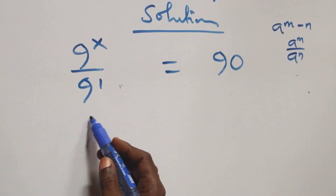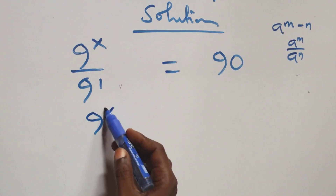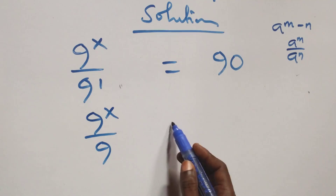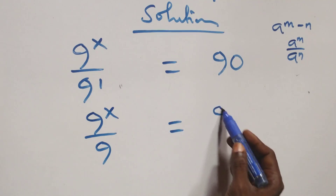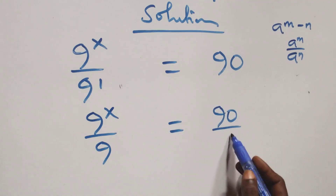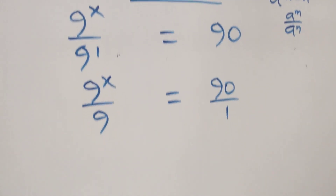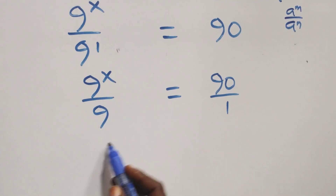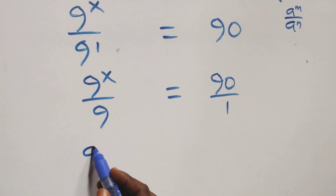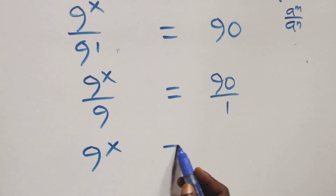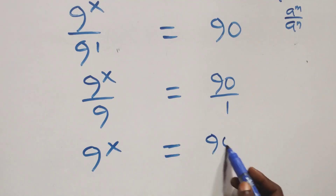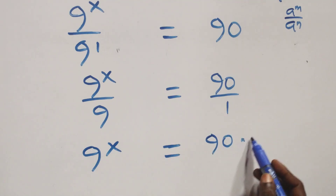This is the same as 9 raised to power x over 9 raised to power 1, that's 9, equals to 90 over 1. The next step, we cross multiply — that is 9 raised to power x times 1, which is 9 raised to power x equals to 90 times 9 on this side.